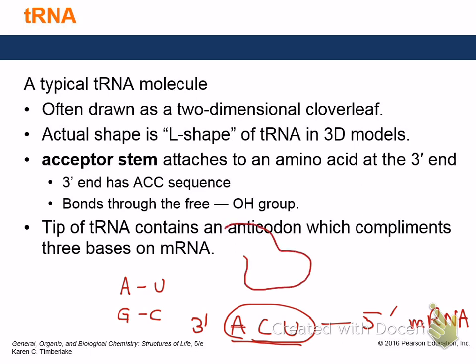Regarding what you need to know about the process: you don't need to know all the specific enzymes. Just know it's a polymerase — RNA polymerase for transcription and DNA polymerase for replication. On the anticodon of the tRNA, you need the complement of the mRNA codon. So if the codon is A-C-U, the complement would be U-G-A on the tRNA — because A pairs with U, C pairs with G, and U pairs with A.